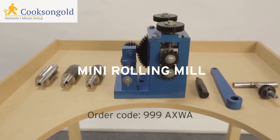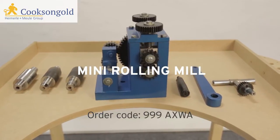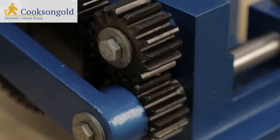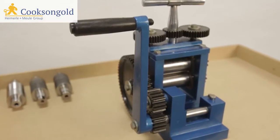They say all good things come in small packages and the Economy Mini Rolling Mill is no exception. Perfect for any workshop, the mill comes with three wire and sheet rollers, guaranteeing consistency as well as quality.